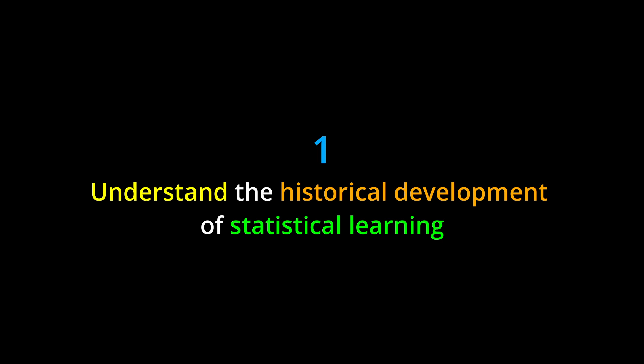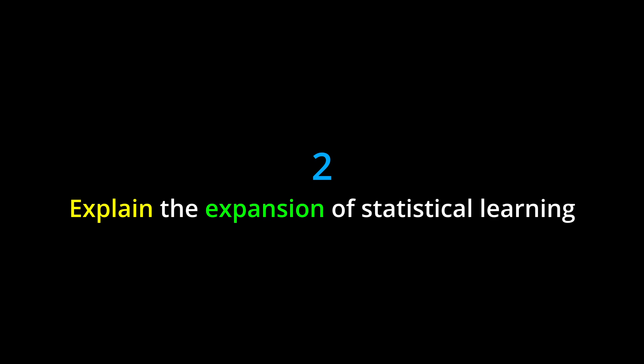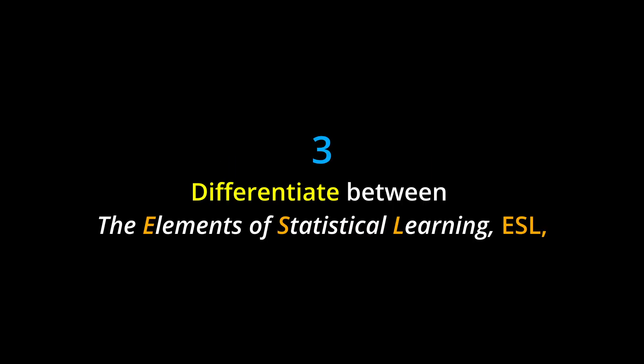Learning objectives: by the end of this chapter, you should be able to: one, understand the historical development of statistical learning and its relevance in various fields; two, explain the expansion of statistical learning and its increasing accessibility to a wider audience.